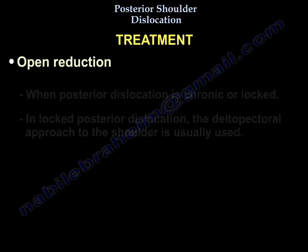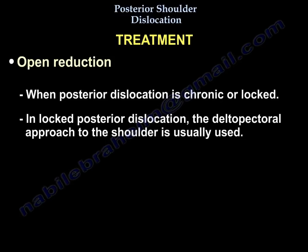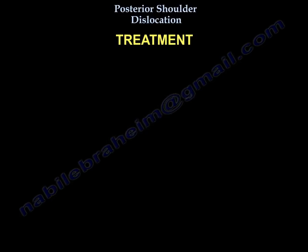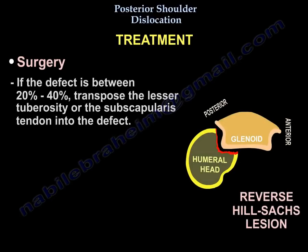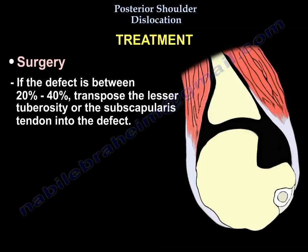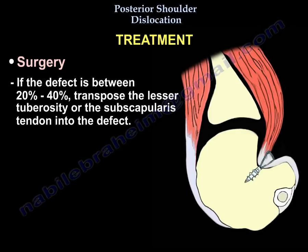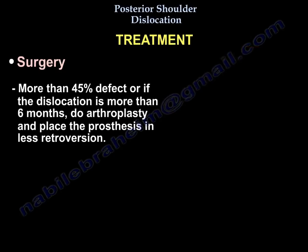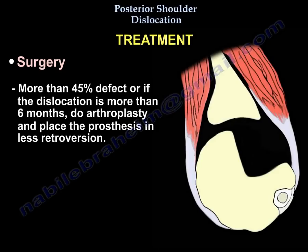Open reduction is done when the posterior dislocation is chronic or locked. We usually use the deltopectoral approach to the shoulder. If the defect is between 20 to 40 percent, you will transfer the lesser tuberosity or the subscapularis tendon into the defect. For more than 45 percent defect, or if the dislocation is more than six months old, perform arthroplasty and place the prosthesis in less retroversion.